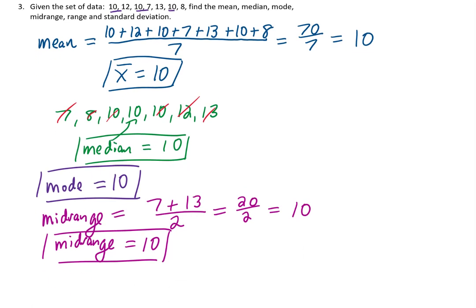Let's find the range. The range of our data is the largest data value minus the smallest data value. That's going to be 13 minus 7. Our range is 6.